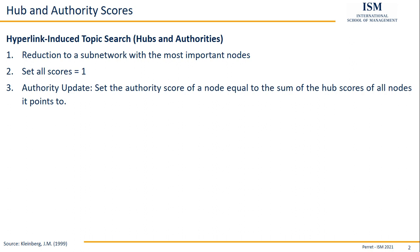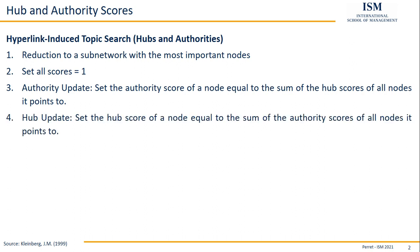That's the important part — it's about pointing in a specific direction. This only leads to really different results if we have a directed network; it doesn't work differently with undirected networks. Authorities get the sum of the hub scores of all nodes pointing to them. With hubs, it's exactly the other way around — they get the sum of all authority scores of nodes pointing to them. So we do basically two times the same thing, but the other way around.